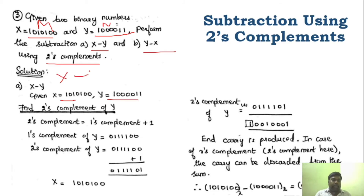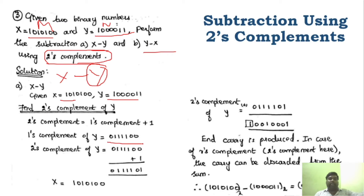For X minus Y, we need to find the R's complement of the subtrahend Y. The R's complement here is the 2's complement. To find the 2's complement, we first find the 1's complement of Y. The 1's complement is 0, 1, 1, 1, 0. Then adding 1 gives the 2's complement of Y.